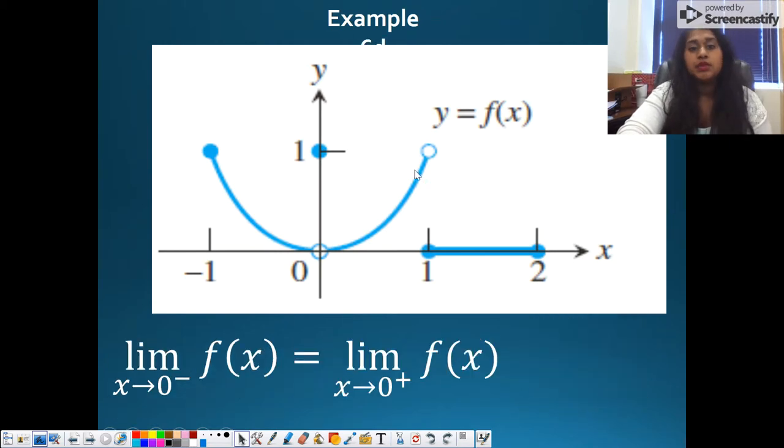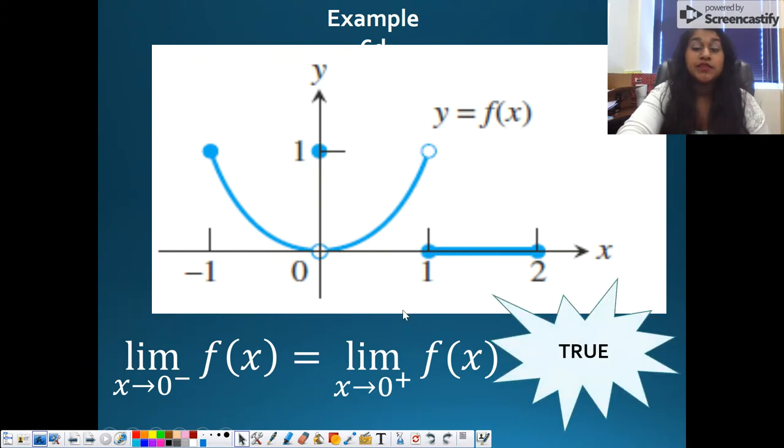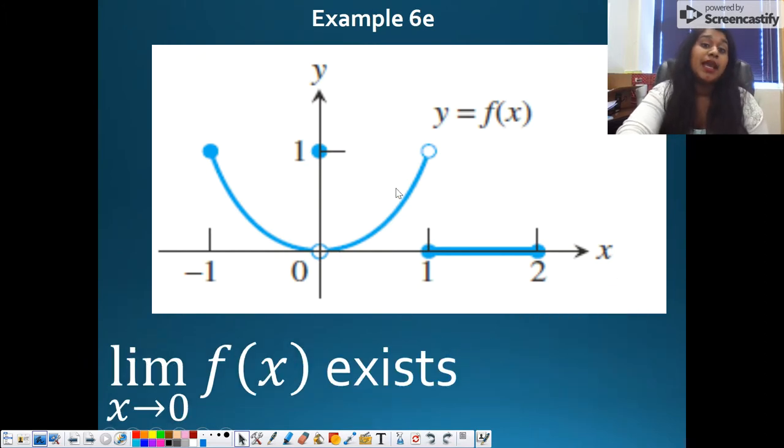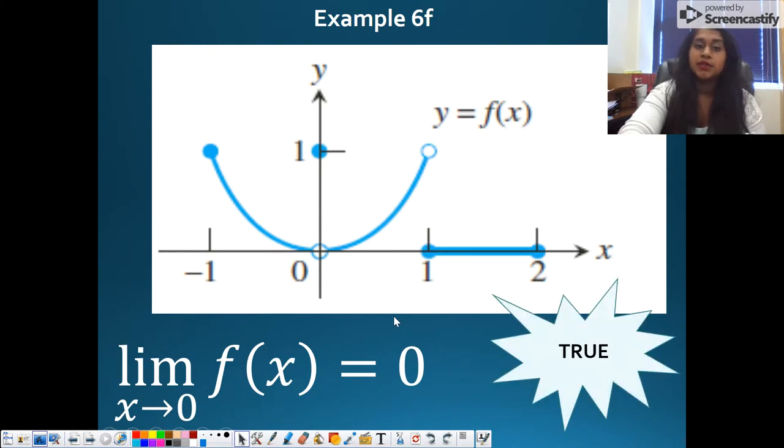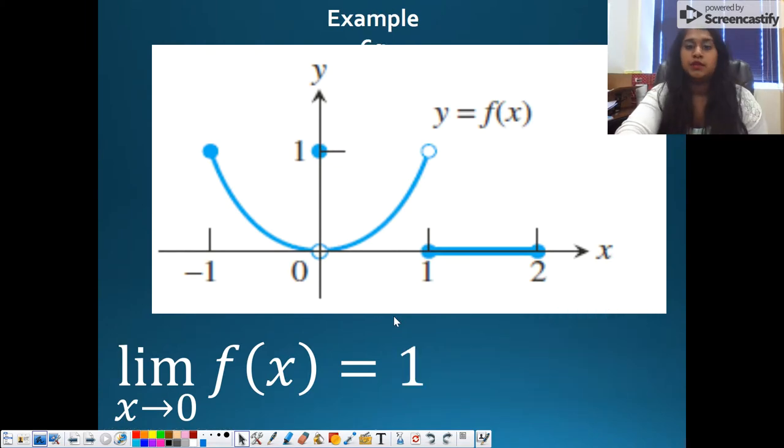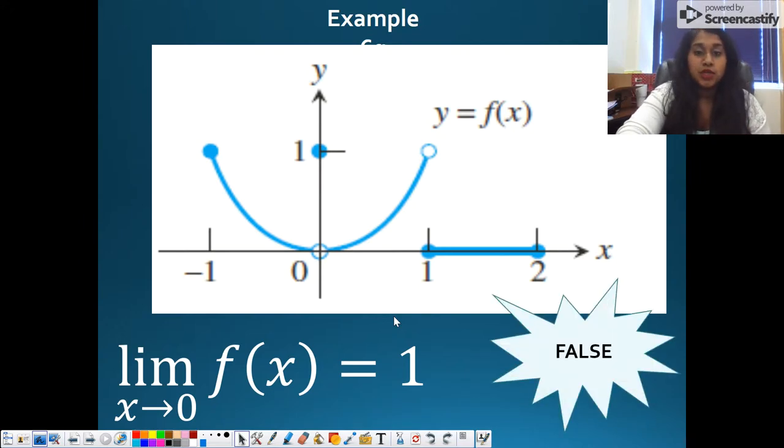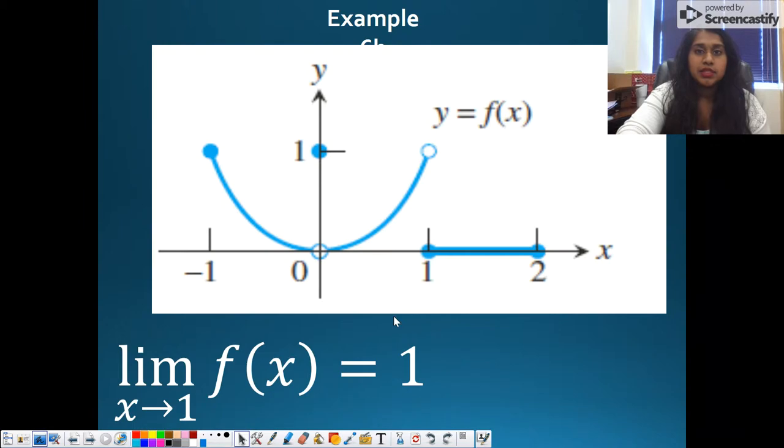Okay. Does the limit from the left equal the limit from the right? Heck yeah, they do. They both equal 0. Which, if that's true, then my limit at 0, does it exist? Yes, it does. Does my limit at 0 equal 0? Absolutely. Because the limit from the left equals 0. The limit from the right equals 0. And if it equaled 0, could it possibly equal 1? No. So that is false.